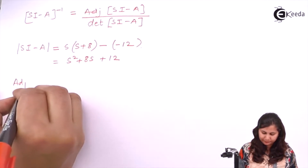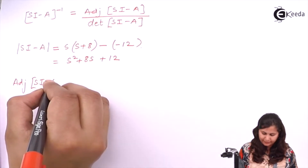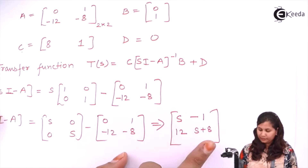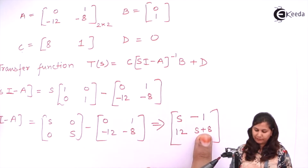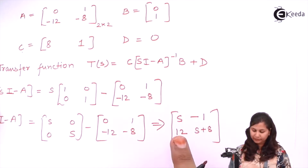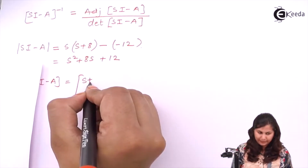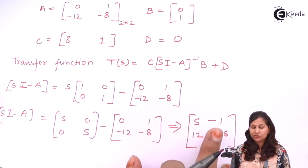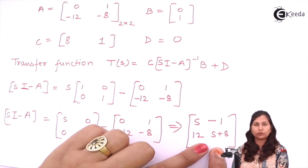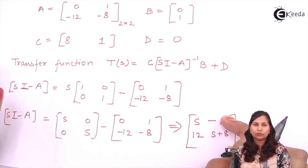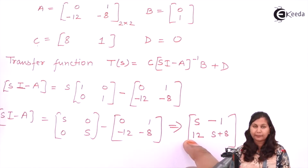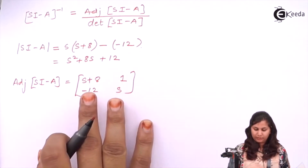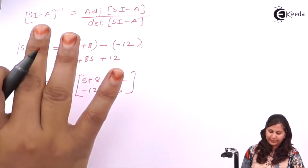Now the adjoint of (sI minus A): we reverse the diagonal elements — s+8 comes to the top-left and s goes to the bottom-right — and the off-diagonal elements change sign. So -1 becomes 1 and 12 becomes -12. The adjoint is [s+8, 1, -12, s].